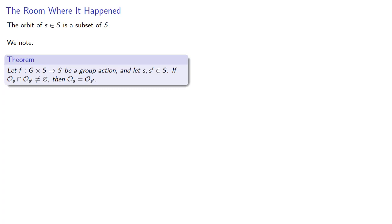Again, it's important to remember that the orbit of an element of S is a subset of S. And so we note the following theorem: let F be a group action, and suppose S and S prime are elements of S. If the orbits have a non-empty intersection, they must be identical.